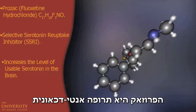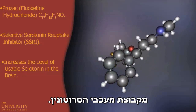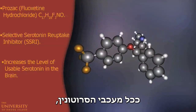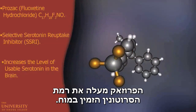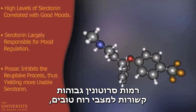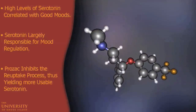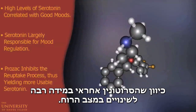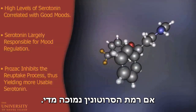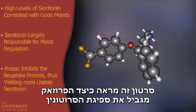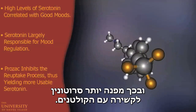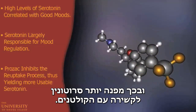Prozac is an antidepressant of the SSRI, or Selective Serotonin Reuptake Inhibitor class. Typical of SSRIs, Prozac increases the level of usable serotonin in the brain. High levels of serotonin are correlated with good moods, as serotonin is largely responsible for mood regulation. But sometimes moods can suffer if serotonin levels are too low. This animation shows how Prozac inhibits the reuptake of serotonin, thus yielding more usable serotonin for receptor binding.